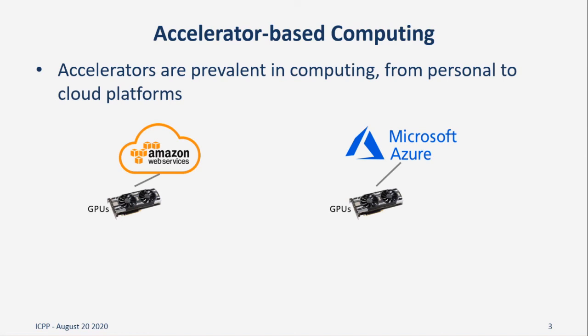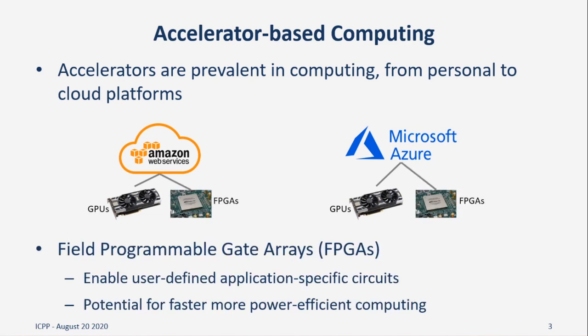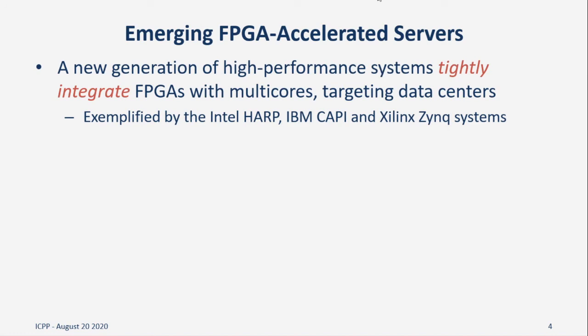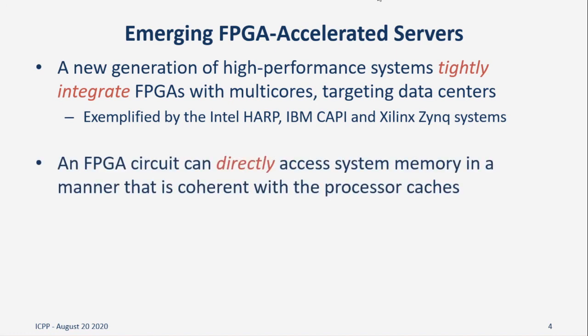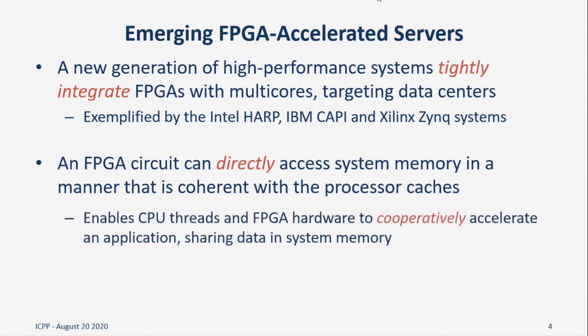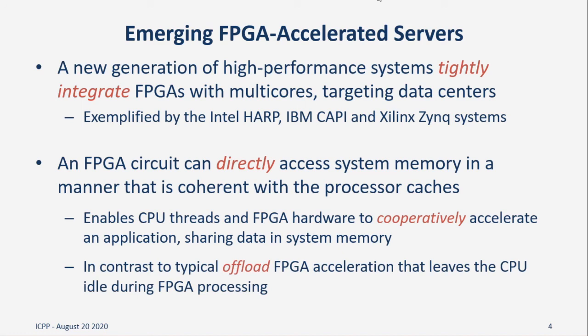Accelerator-based computing has become increasingly popular for both personal use as well as cloud systems. The most familiar form integrates a GPU for acceleration. However, field programmable gate arrays, known as FPGAs, are also gaining in popularity. FPGAs allow users to build custom application circuits, which can result in better performance with lower power requirements. Some vendors are building systems that couple FPGAs with server-grade processors, such as Intel's HARP and IBM's CAPI platform. These systems tightly couple the CPU and FPGA, enabling the FPGA circuit to directly access system memory.